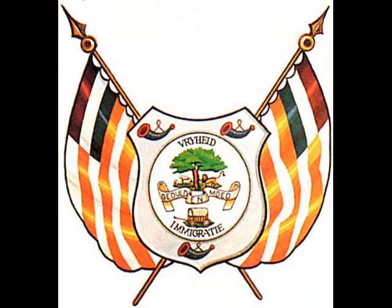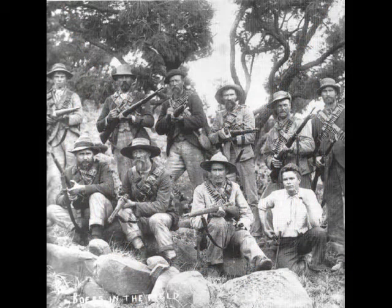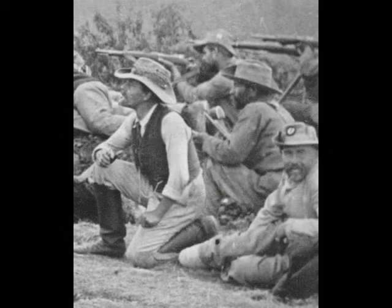From Bloemfontein, the capital of the Orange Free State, the Boers marched east into Natal, north-west into Mafeking, west towards Kimberley, and south into the East Cape. The South African War, or Anglo-Boer War, had started.